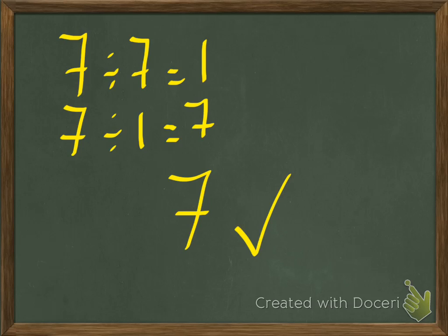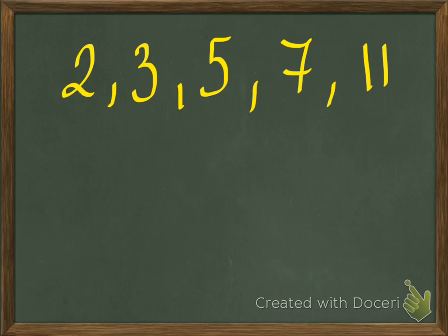And so what you'll soon get to realize is that the first few prime numbers are 2, 3, 5, 7, and then you go 11. But you can work out any number.